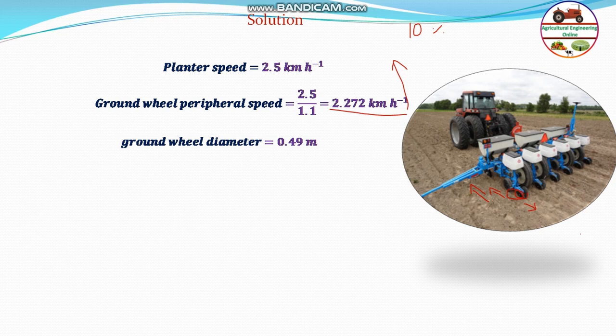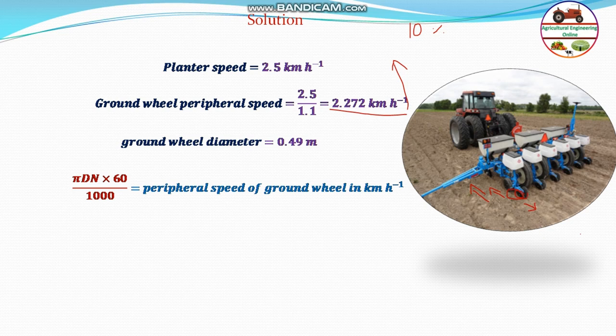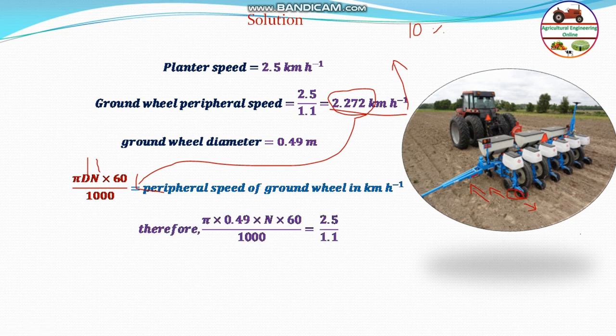The ground wheel diameter is given as 0.49 meter. If n is the RPM of the ground wheel, then the peripheral speed formula is π × d × n × 60 divided by 1000, where d is in meters and n is in RPM, giving speed in km per hour. Setting this equal to 2.272 km per hour and solving, the angular speed of the ground wheel n equals 24.6 RPM. This is the answer to the first part of the question.